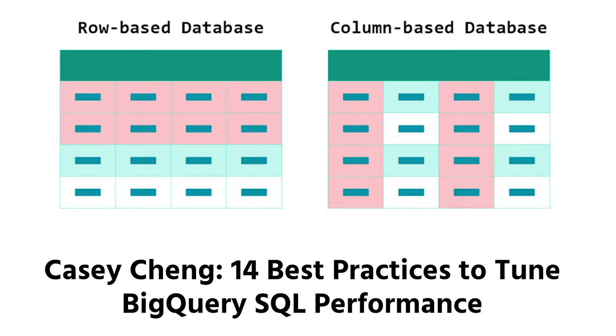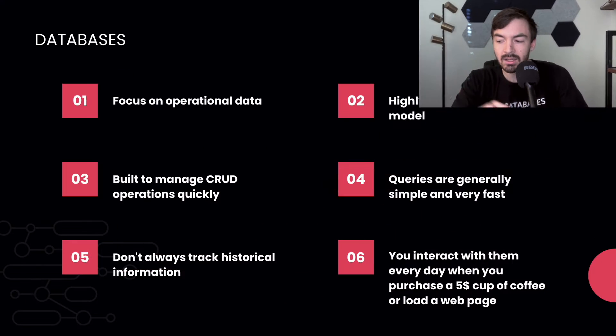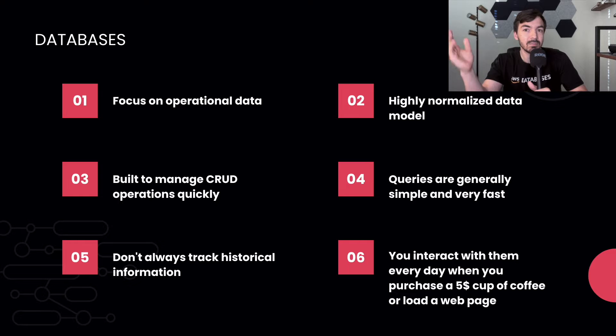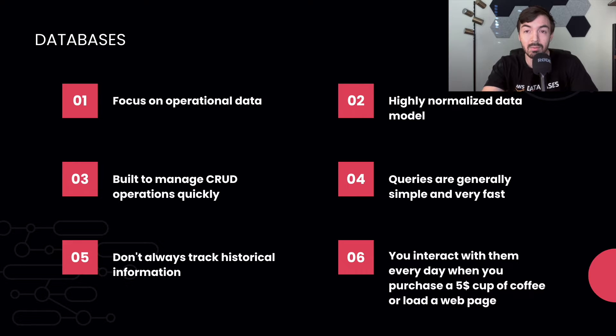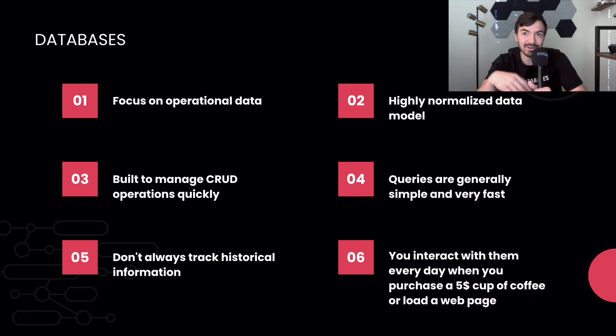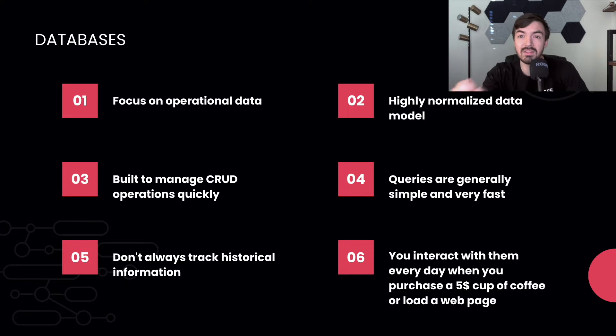That is to say that data is essentially stored as a row. This is important because for many data warehouses — at least data warehouse specific systems — they're columnar, but more about that later. For now, all data is stored as essentially a row, especially in classic relational database management systems. This is important because when you perform CRUD operations, rows are much more efficient generally to run said operations.